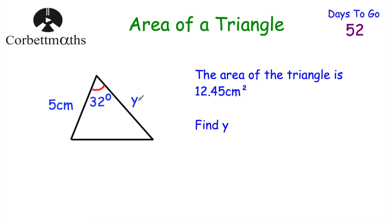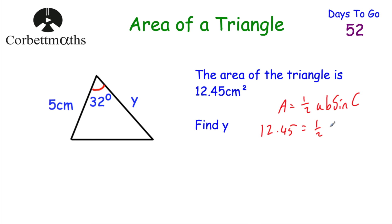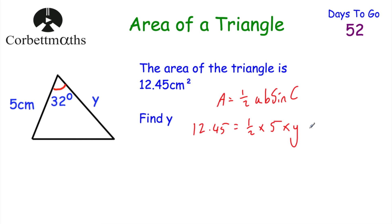Now let's look at another question. This time we've been given that the area of a triangle is 12.45 centimetres squared, and we've been asked to find Y — the length of one of the sides. Feel free to pause now. To find the length of the side, start by writing down the formula: area equals a half AB sine C. This time the area is 12.45, and that equals a half multiplied by A (which is 5), multiplied by B (which is Y), multiplied by the sine of 32 degrees.